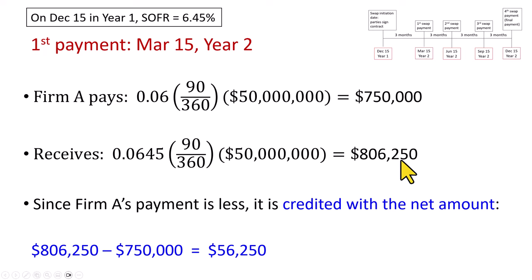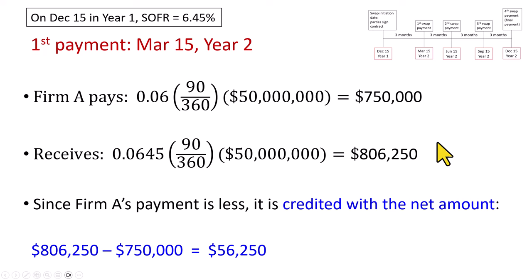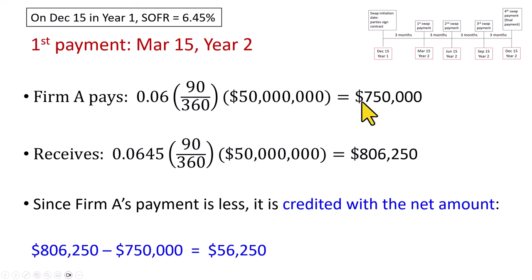You might think that for this to be a swap, Firm A would sign a check for $750,000 and hand it to the counterparty, then receive a check for $806,250 in return. But it doesn't really work like that. Since Firm A's payment is less than what it receives, it is simply credited with a net amount of $56,250.